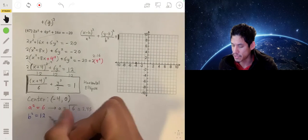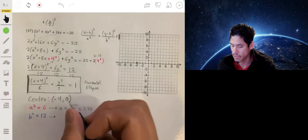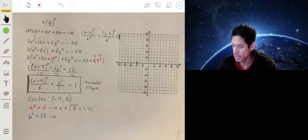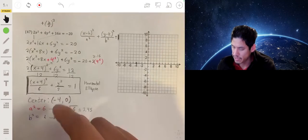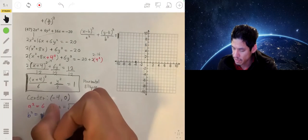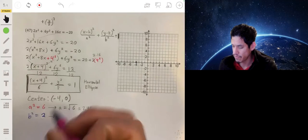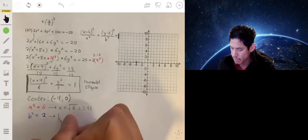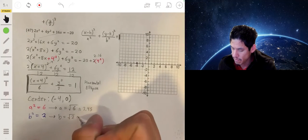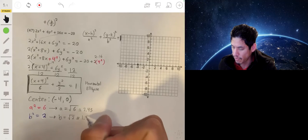And then b will be... b squared is 2, so b is the square root of 2, and that will be about 1.41.